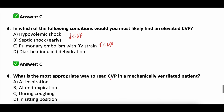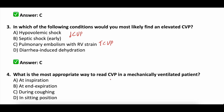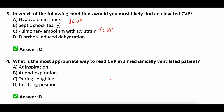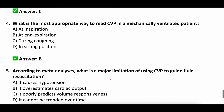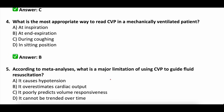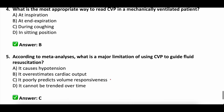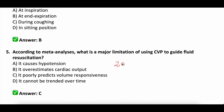Question number four: what is the most appropriate way to read CVP in a mechanically ventilated patient? A: at inspiration, B: at end expiration, C: during coughing, or D: in the sitting position. The correct answer is B — at end expiration. Make sure you are doing this at end expiration so that the inspiratory effort is not throwing off what the CVP actually is. Question number five: according to meta-analyses, what is a major limitation of using CVP to guide fluid resuscitation? A: it causes hypotension, B: it overestimates cardiac output, C: it poorly predicts volume responsiveness, or D: it cannot be trended over time. The correct answer is C — it is a poor predictor of volume responsiveness. That trial on 2,000 critically ill patients did not correlate CVP with volume responsiveness.